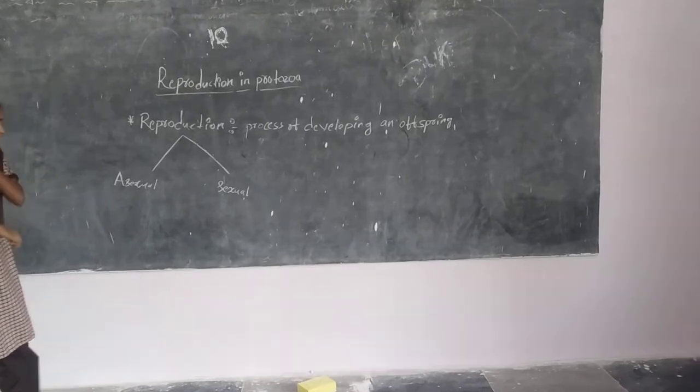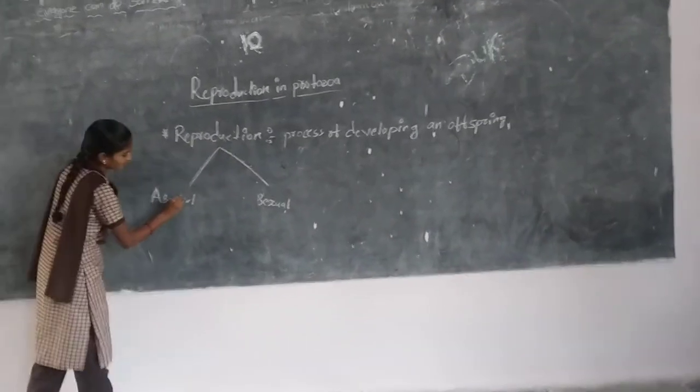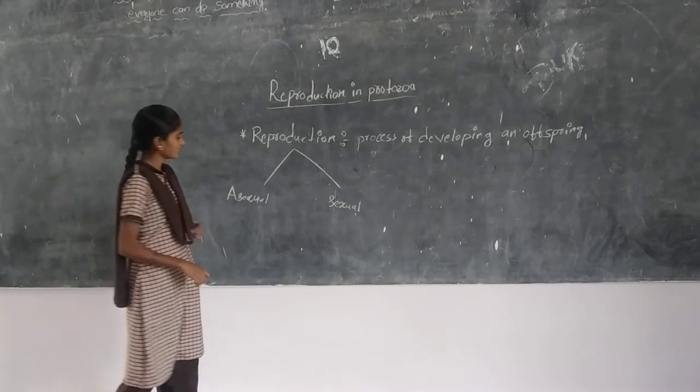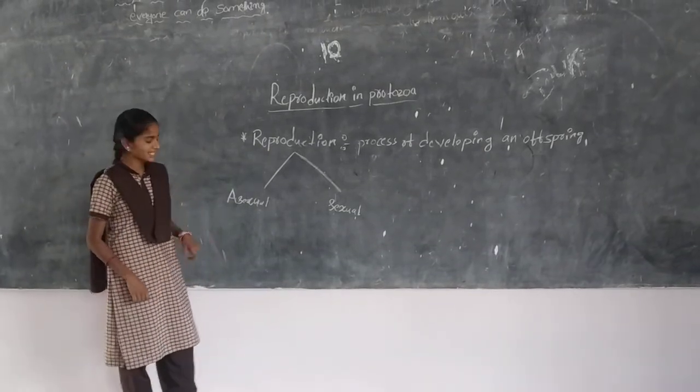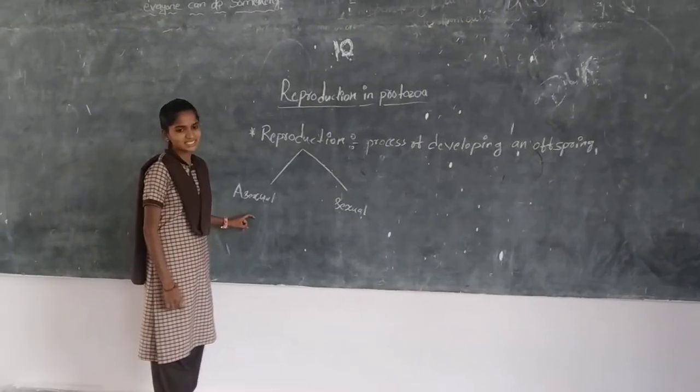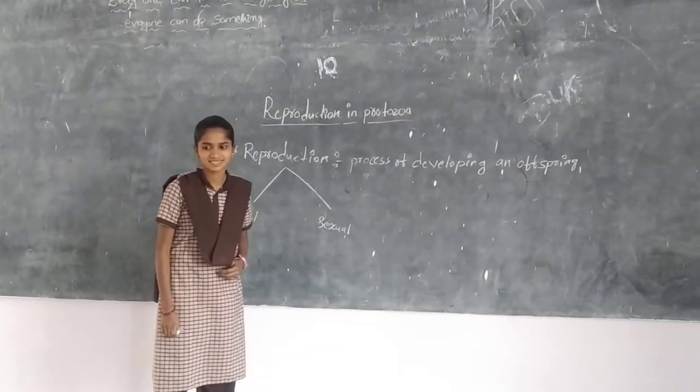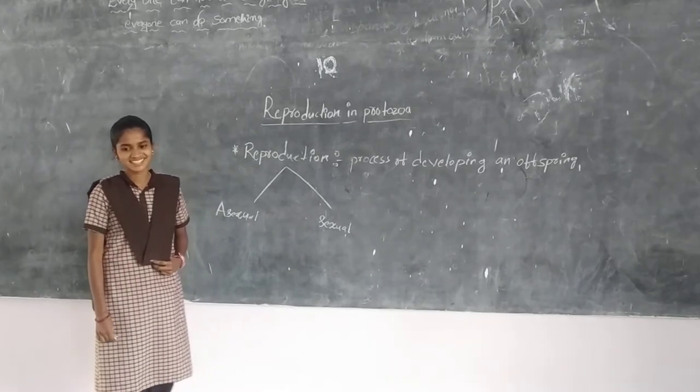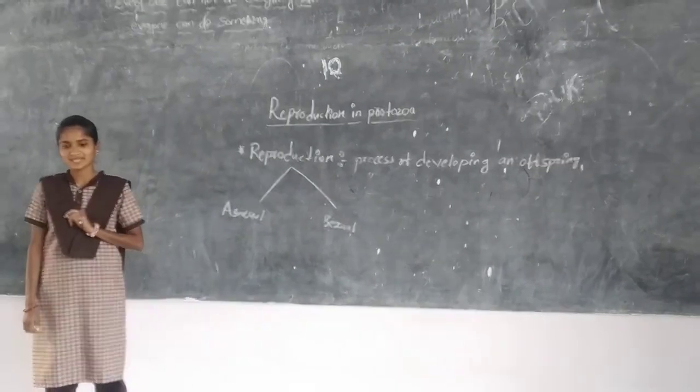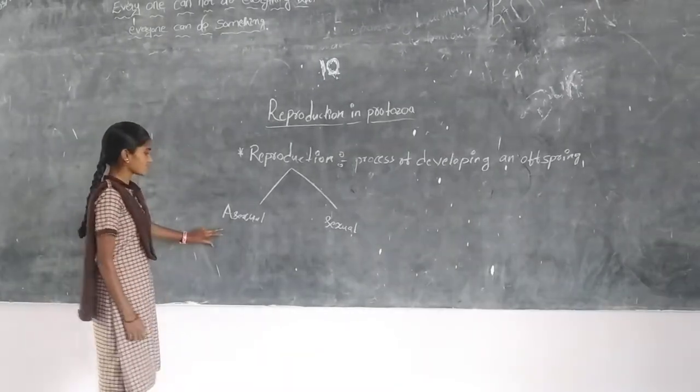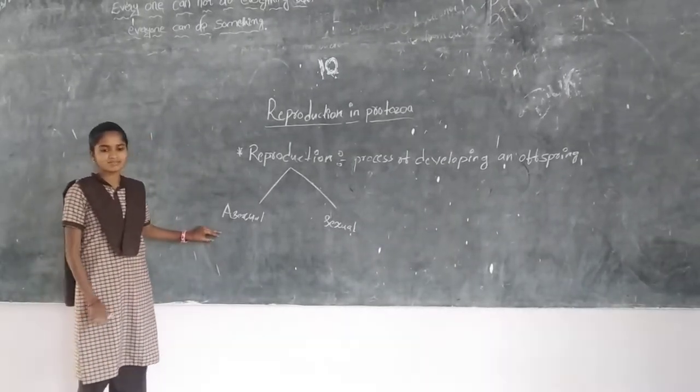What is meant by asexual reproduction? In this asexual reproduction, there is no fusion of gametes. There are two types of gametes, one is male and another female. In this process, there is no involvement of gametes.